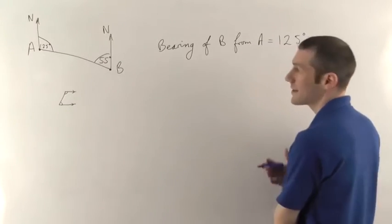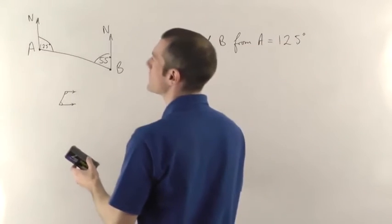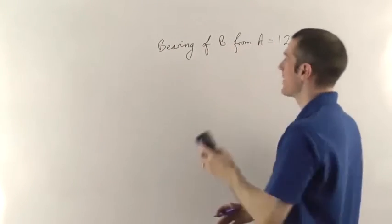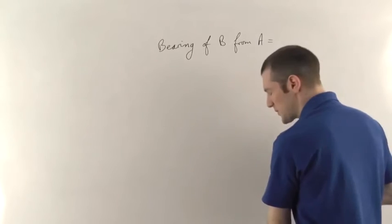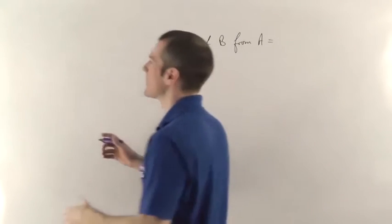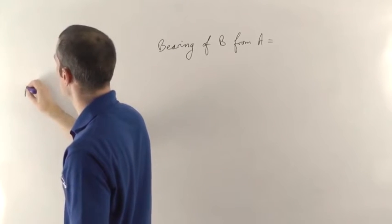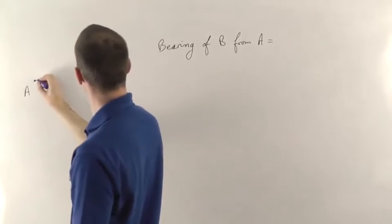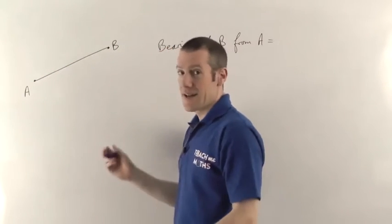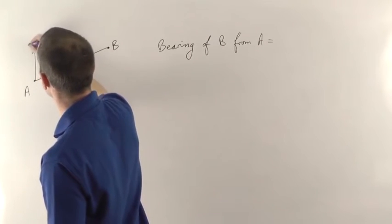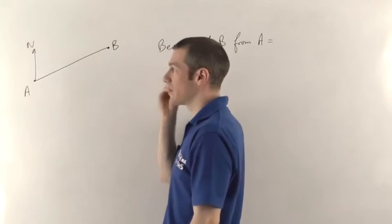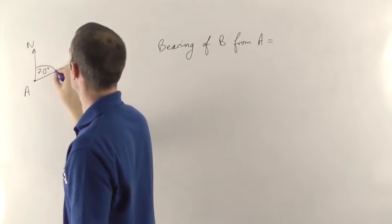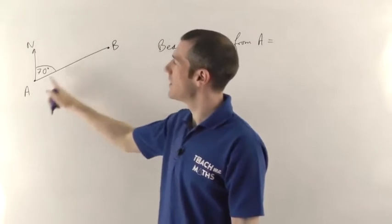They can get a little bit harder, so let's try a couple more. The main thing to watch out for with bearings questions is that the angle must be measured clockwise from north. To illustrate that: if we change the points around, say that's now point A and put point B over there, join them with a straight line — this time the question draws a north line here and tells you that angle is 70 degrees, which is actually the bearing of B from A.